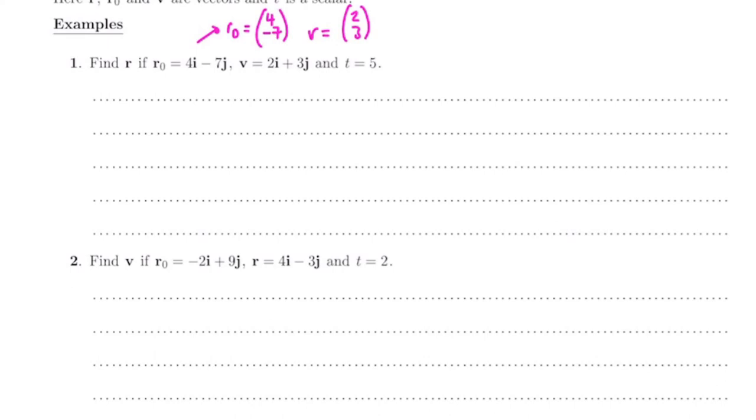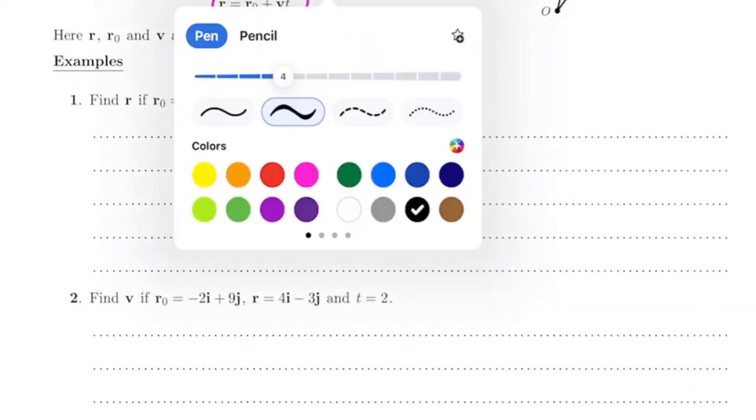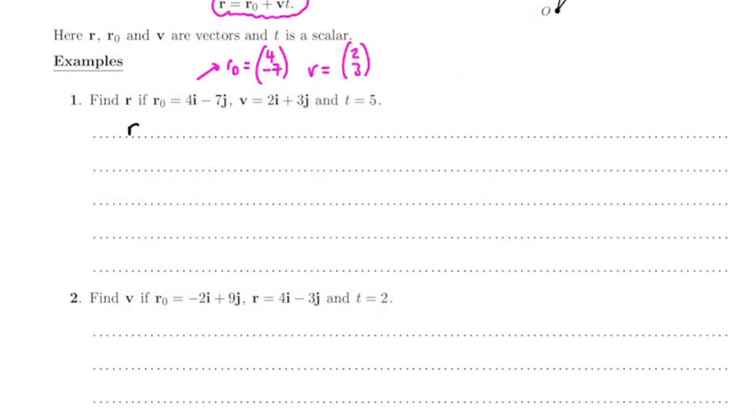Remember the formula: r, your position at any time, is r₀ plus vt. I'm going to work in column vectors. So it's (4, -7) plus 5 times (2, 3). That's velocity times time; we usually put the time at the front but you can put it back. So it's 5 times (2, 3). Then if you just multiply across and add things: 4 plus 5 times 2 will be 14, and negative 7 plus 5 times 3 is 8.